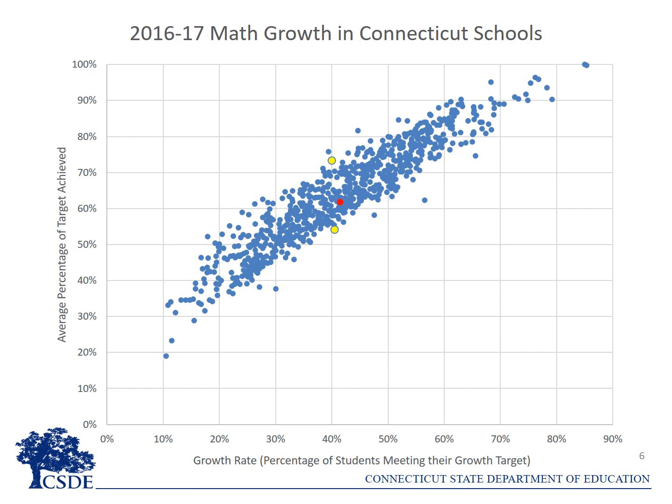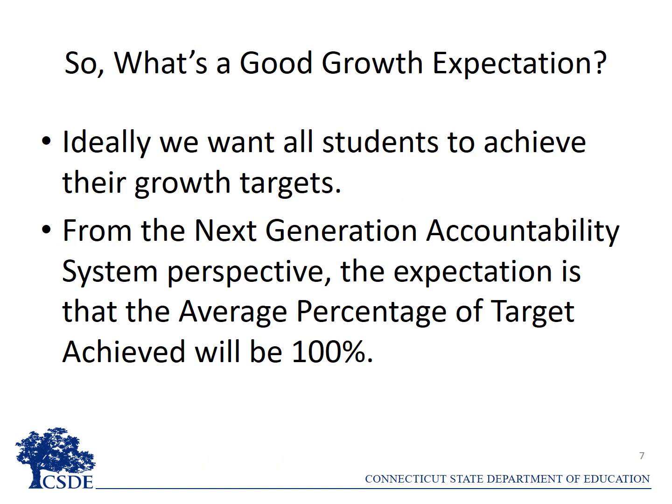One other point: when the average percentage of target achieved is 100%, the percentage of students meeting their growth targets — the growth rate — may be slightly less than 100%. This happens because when calculating the average percentage of target achieved, the model gives credit for the growth of an individual student up to 110% of their target, while setting the floor at 0%.